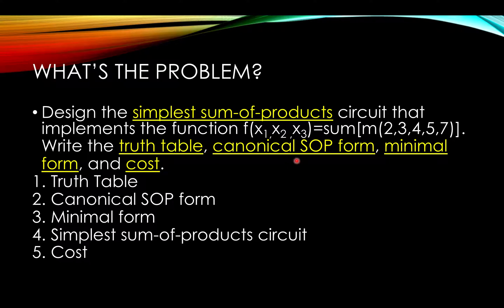Write the truth table, canonical SOP form, minimal form, and cost. So we will be doing the truth table first, then the canonical sum of products form, then minimal form, fourth simplest sum of products circuit, and then we will lastly do the cost.